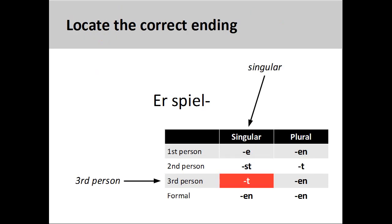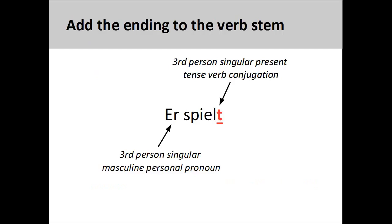We then need to find the correct third-person singular verb ending on the chart. Here, the correct ending '-t' is marked in red. Once that is done, we simply add that ending to the verb stem to produce 'er spielt', 'he plays'.